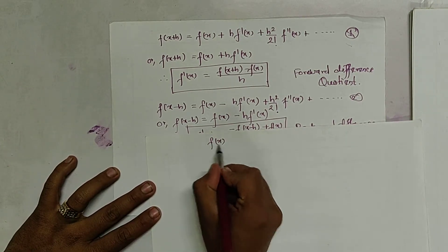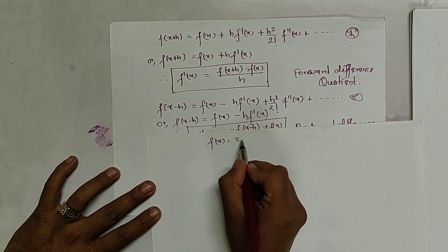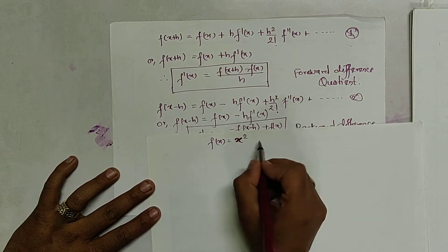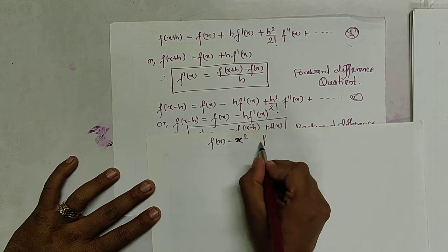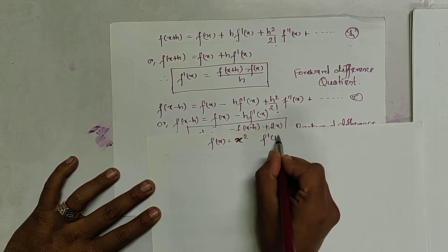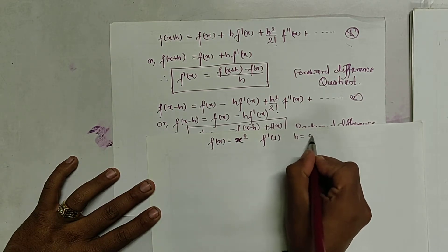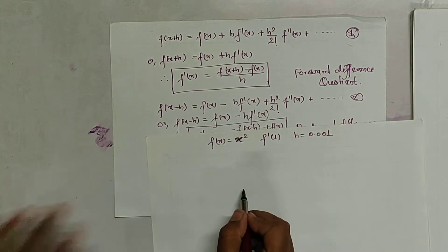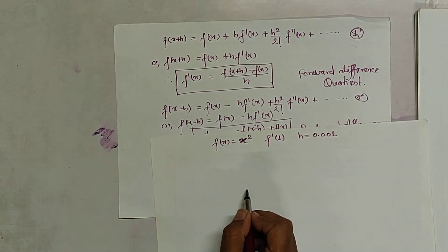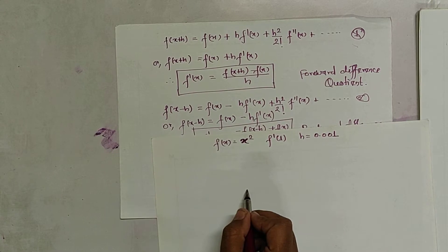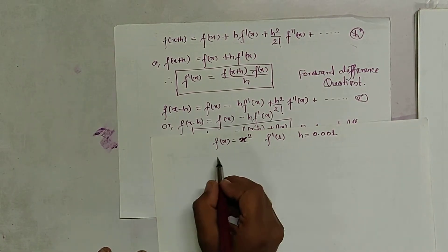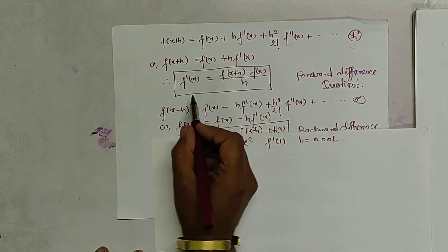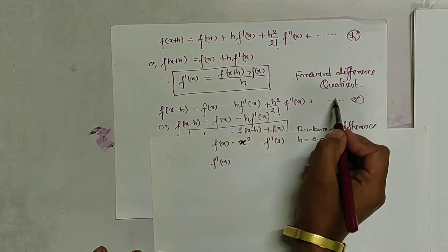These are the formulas to find the derivative of a function. Let us consider an example: f(x) equals x², and we have to find the value of f'(1) where h is 0.001.